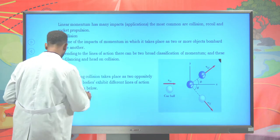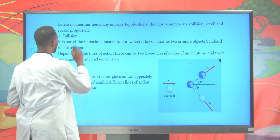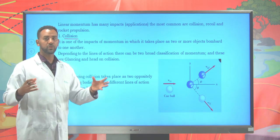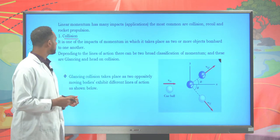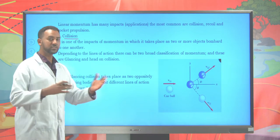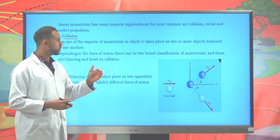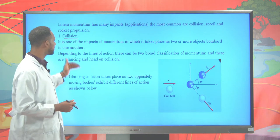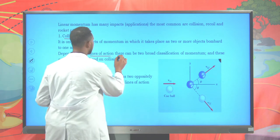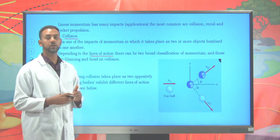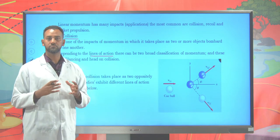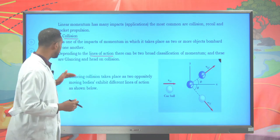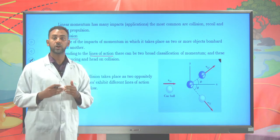One good application of momentum is collision. Collision is the impact between two or more objects, and it has different types. You need criteria to classify collision. The first criterion, depending on the lines of action along which those bodies are colliding, it is possible to classify collision into two: glancing collision and head-on collision.